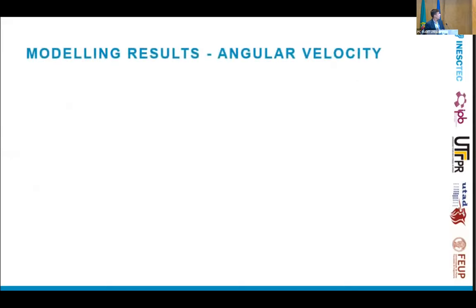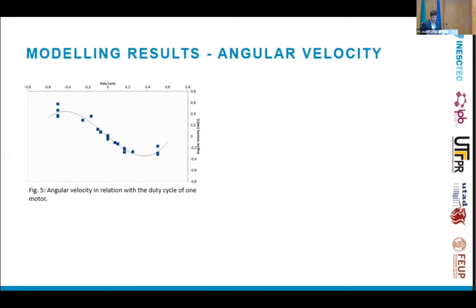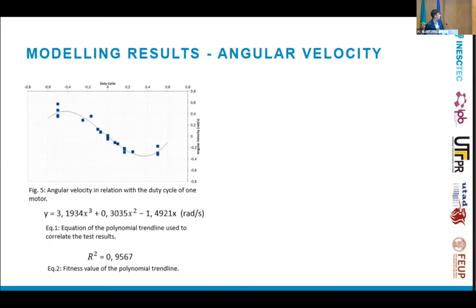We then proceeded to do some tests. In these tests, we changed the overall PWM of both the robot motors. The robot has two motors that do the overall vibration and make the robot move. We changed the PWM, meaning the relation between both motors, and these were the results we got. We used the polynomial trendline to get the equation, as you can see here. And you have the fitness value of this polynomial trendline.